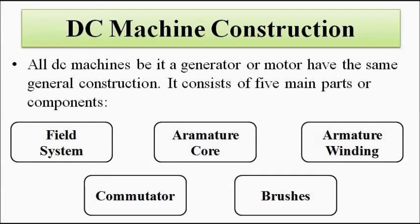The armature core and armature winding are combined together and it is generally the movable or rotating part of the machine, which rotates in the uniform constant magnetic field. This is the stationary field, rotating armature type. The field system will be stationary; the armature core and winding combined will be movable or rotating. Then we have the commutator and brushes, which act as a mechanical rectifier converting the AC voltage developed in the loop into DC.